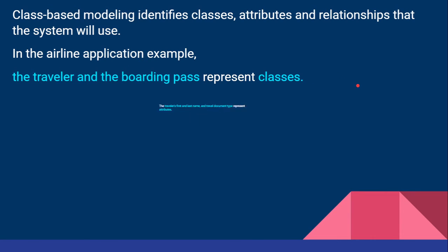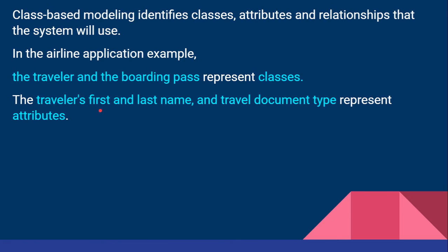These are the two classes. The traveler's first name, last name, and travel document type represent the attributes. So for the traveler class we have to find out the attributes. The first name, last name, and travel document type are the three attributes represented by the traveler class.